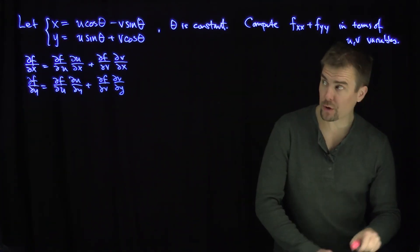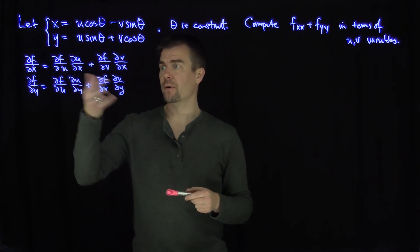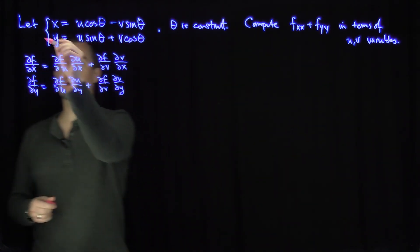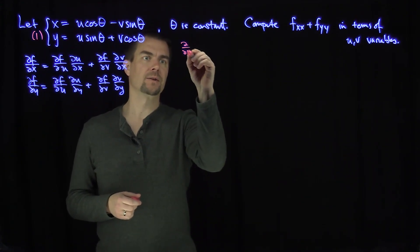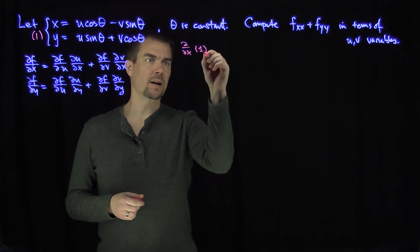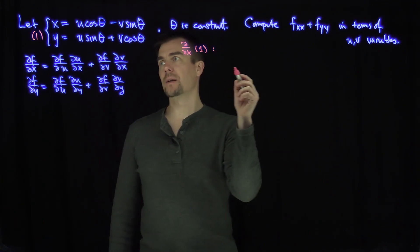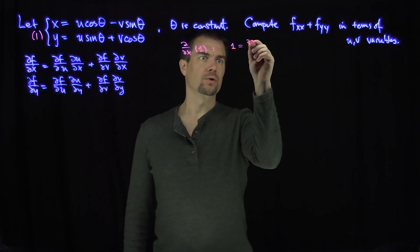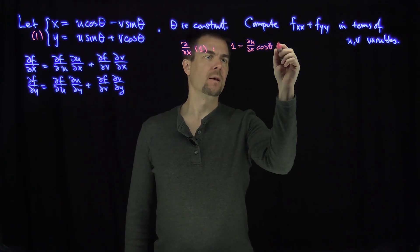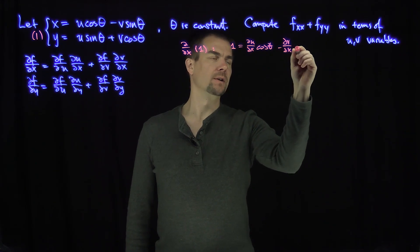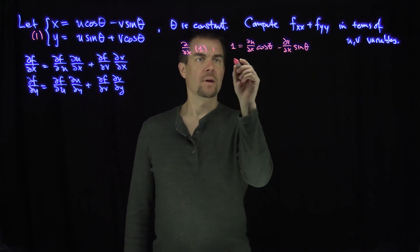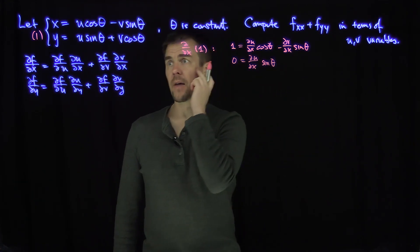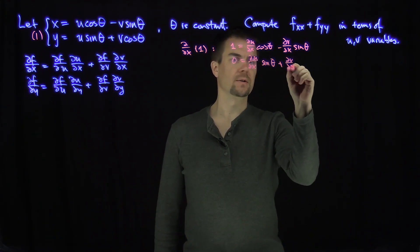Rather than explicitly solving for u and v, we differentiate the transformation equation with respect to x. This gives: 1 = (∂u/∂x)cosθ - (∂v/∂x)sinθ, and 0 = (∂u/∂x)sinθ + (∂v/∂x)cosθ. We now have two equations and two unknowns.